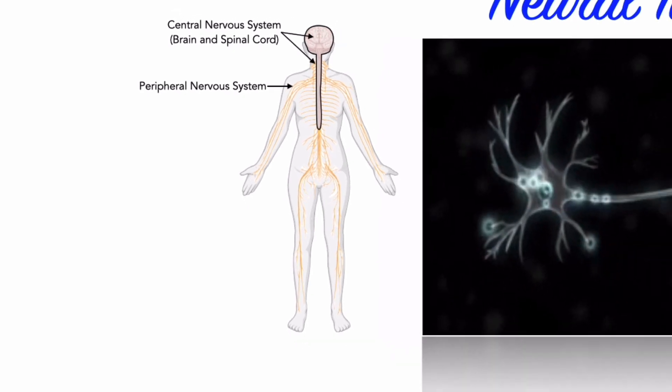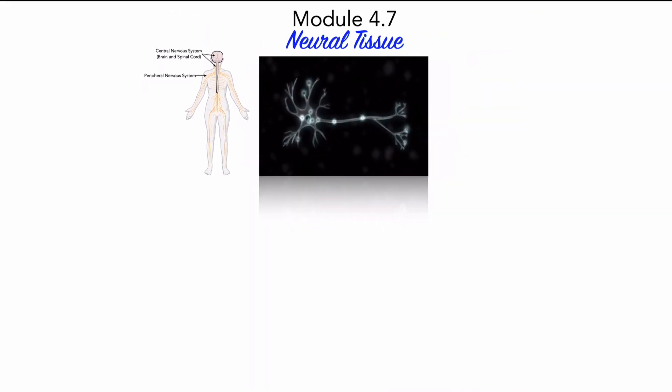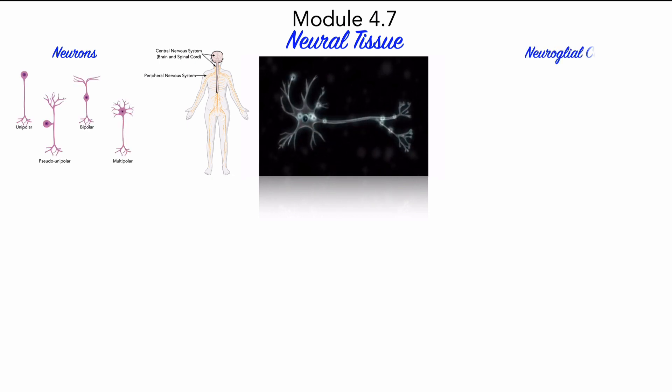Neural tissue contains many cell types. Most fall into one of two basic categories: neurons, and several different kinds of supporting cells called neuroglial cells.